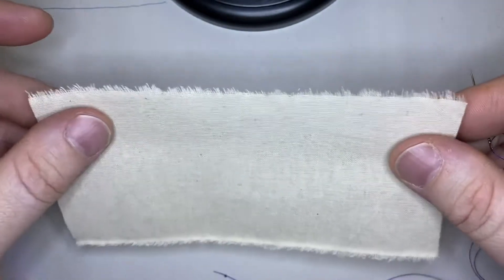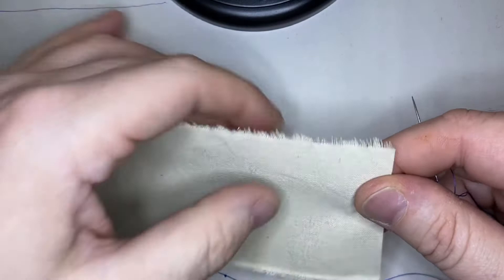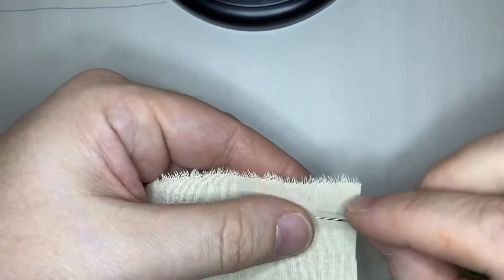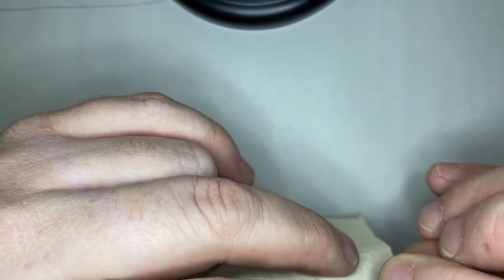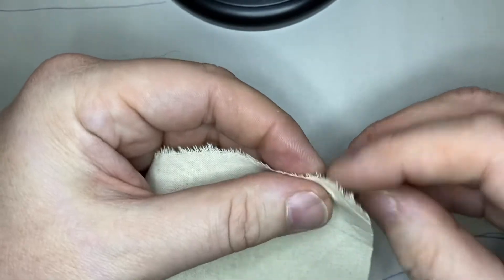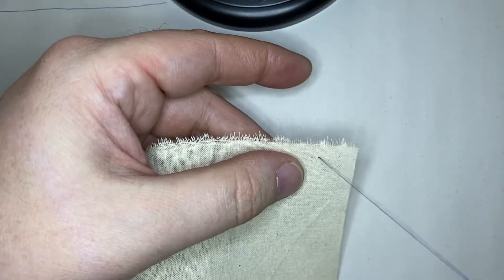You do the blanket stitch along the edge of the fabric. And to start, I want all your stitches to come in about a quarter of an inch down from the edge. So, we come in through the back first. Pull that until your knot is in place.